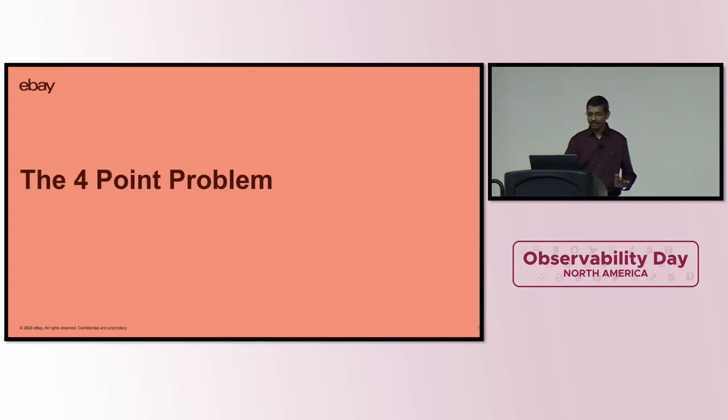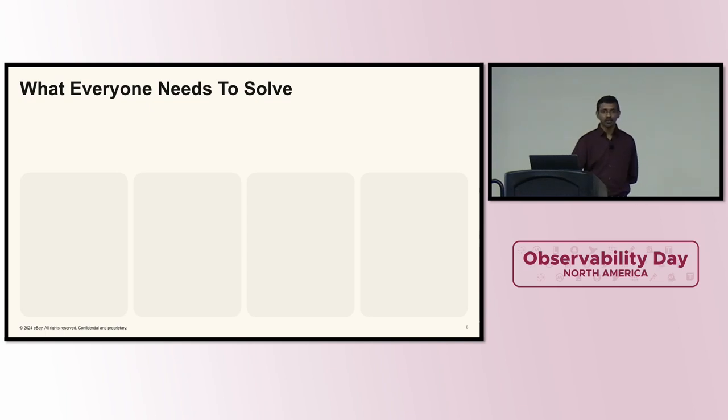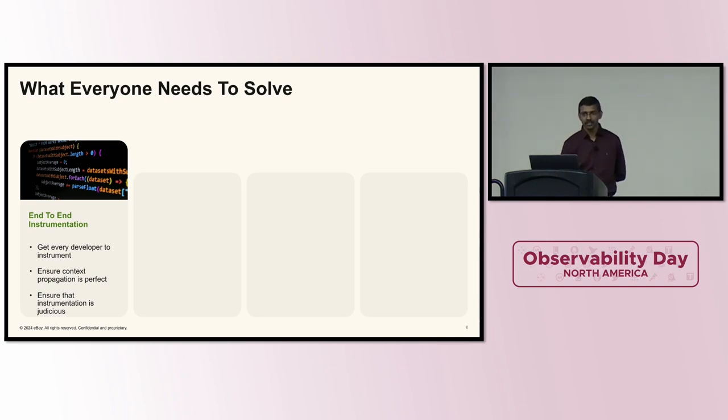Tracing, in our opinion, is a four-point problem. And this is something that everyone needs to solve as they get into the journey of distributed tracing. The first one being there needs to be end-to-end instrumentation. By the definition, every single application needs to be instrumented with distributed tracing. This involves getting every developer to instrument, ensure that context propagation is being done right. So when the client invokes another service, the required headers need to be propagated to ensure that everyone in the call chain knows that they are part of the same request chain. And ensure that the instrumentation is judicious. We don't want to dump too many things, because the longer the call chain gets, the more time it's going to take for someone to make sense out of it.